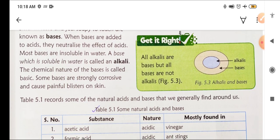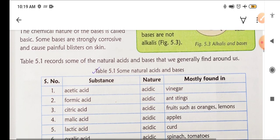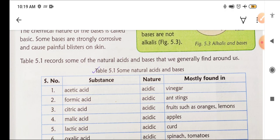When bases are added to acids they neutralize the effect of acids. Most bases are insoluble in water, whereas acids are soluble in water. Now there is one new term: alkali. A base which is soluble in water is called alkali. All alkalis are bases, but all bases are not alkalis. The chemical nature of bases is called basic.